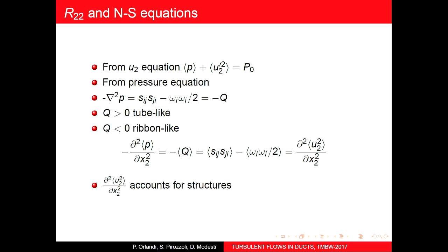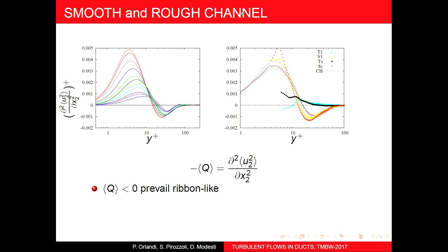In homogeneous turbulence, S_ij and omega-squared are equal, so nothing interesting happens. But in wall-bounded flows, both become important. From the governing equation, the second derivative of the normal stress accounts for these structures. Here we show results for a smooth channel and a rough channel to see how structure changes.